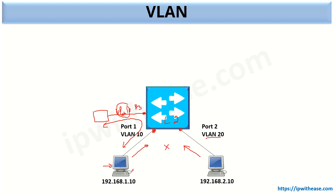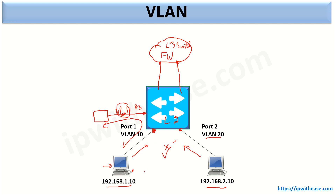If we want devices on different VLANs with different IP subnets to communicate to each other, this layer 2 switch will have to extend its connectivity physically to either a layer 3 switch, a layer 3 router, or maybe a firewall. Through that connectivity, inter-VLAN communication will be possible, so different subnet or different VLAN devices will be able to communicate to each other via the help of any layer 3 capable device.